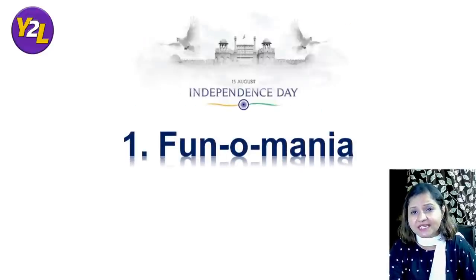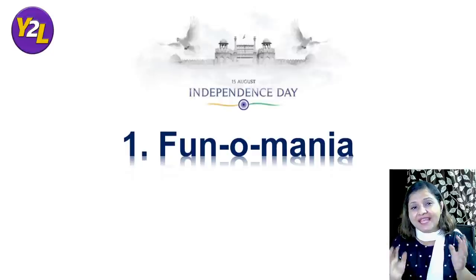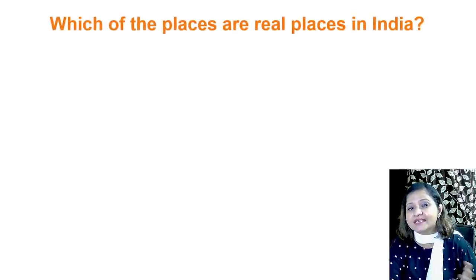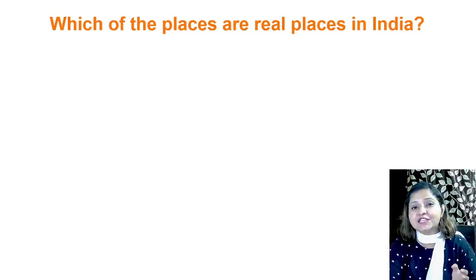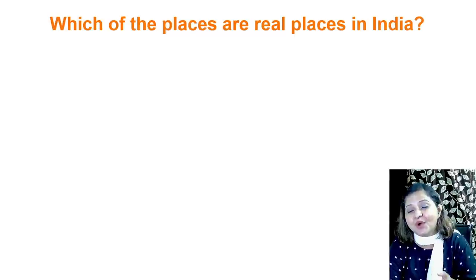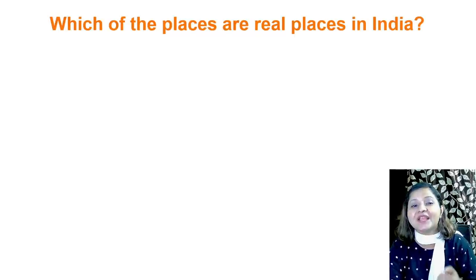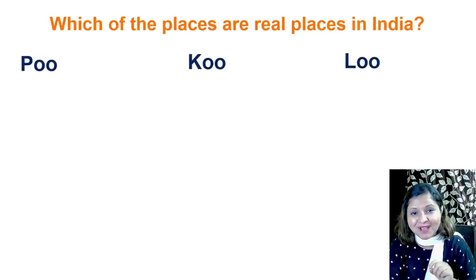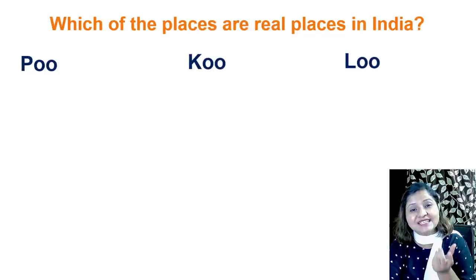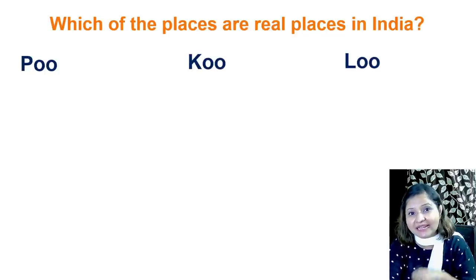The first activity is Funomania, where students would have fun and learning side by side. For example, you can create a game where they need to find the odd one out. One example: which of these are real places in India? Students have to identify which is actually a town in India from a set of funny names.